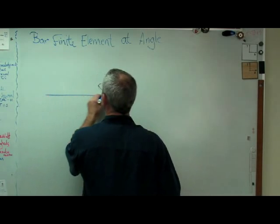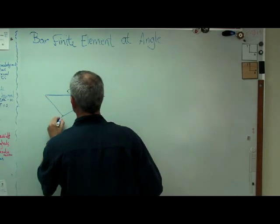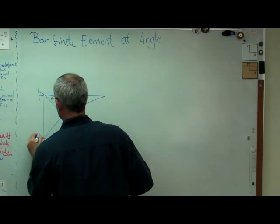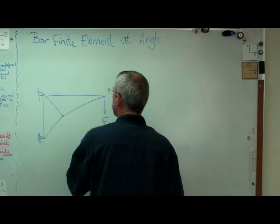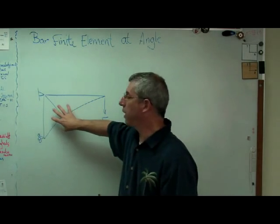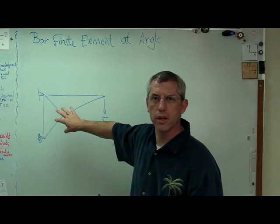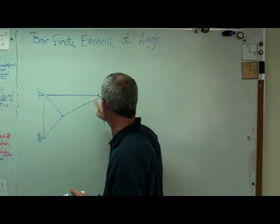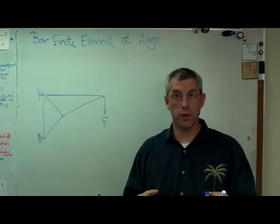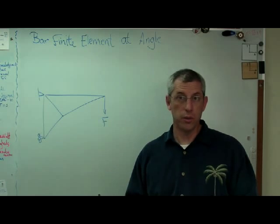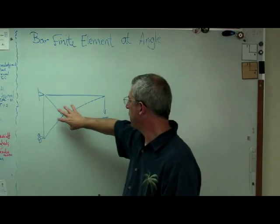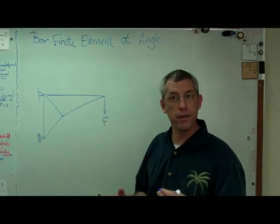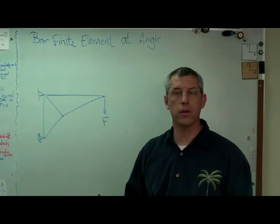What if I wanted to do a simple frame that looked like this and had a force on it? There are just a couple of elements in here. There's going to be zero, one, two, three, four, five degrees of freedom. So we're going to wind up with a five-by-five global stiffness matrix. It's not going to be very big, but three or four of those elements are not horizontal, so we have to have some way to account for the fact that they're not horizontal.